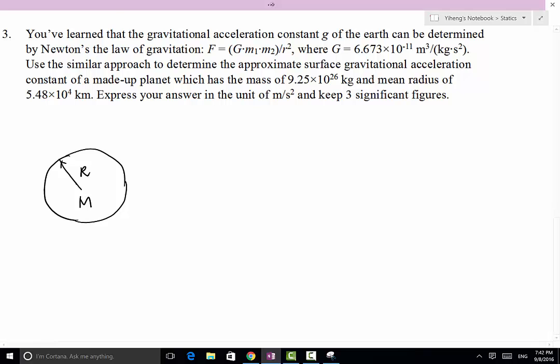and then if you have an object on top of, on the surface of the Earth with mass of small m, the distance between the object and Earth can be approximated by the radius of Earth,